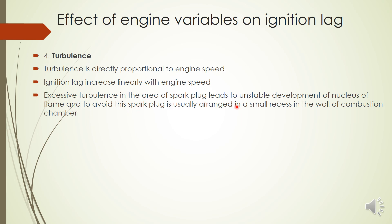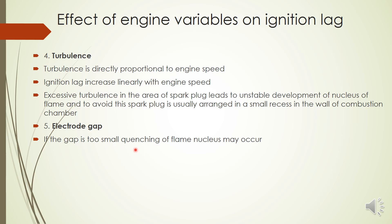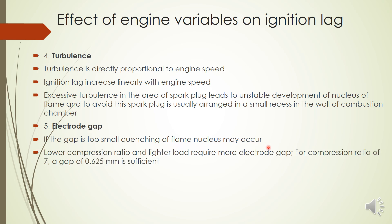Another factor affecting ignition lag is the spark plug electrode gap. If the gap is too small, quenching — cooling of the flame nucleus — will occur. At lower compression ratios and lower loads, a larger electrode gap is required; for example, at a compression ratio of 7, an electrode gap of 0.26–0.5 mm is required. If the gap is too small, ignition lag will be greater and quenching of the flame nucleus will occur.